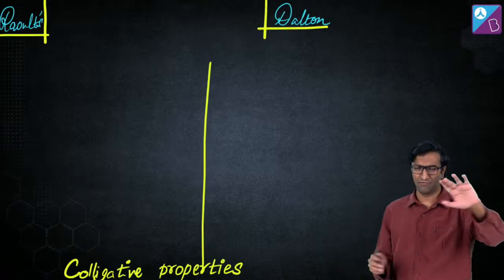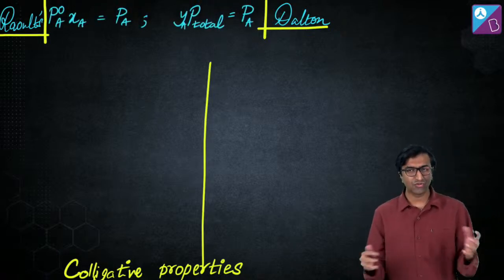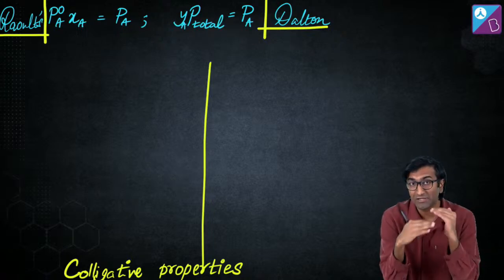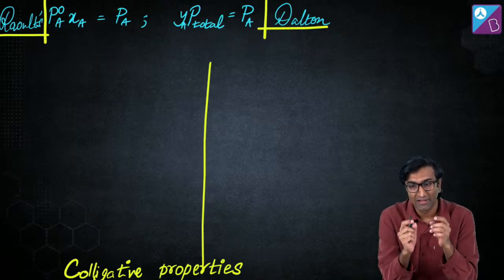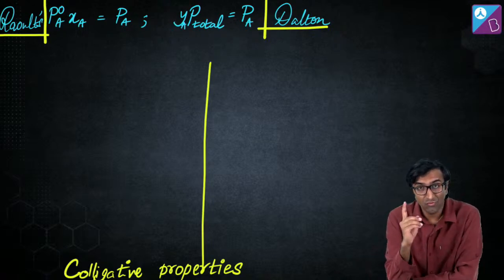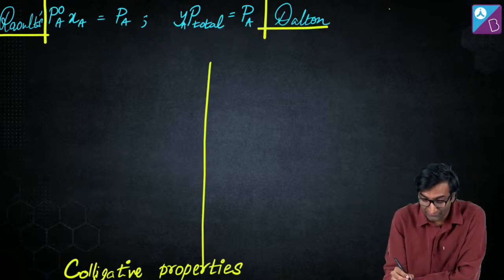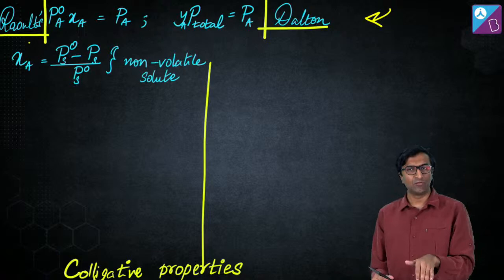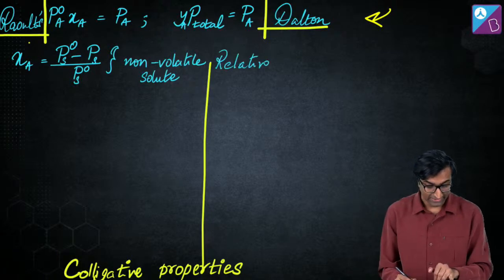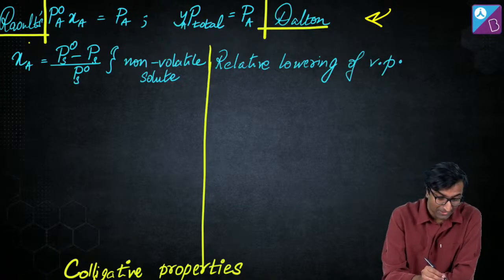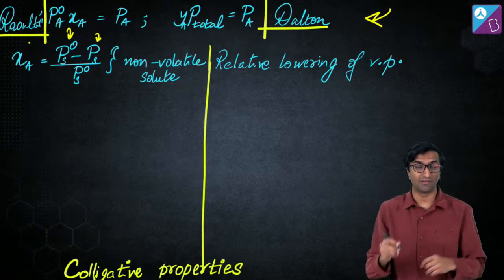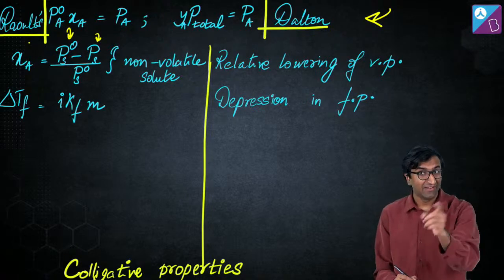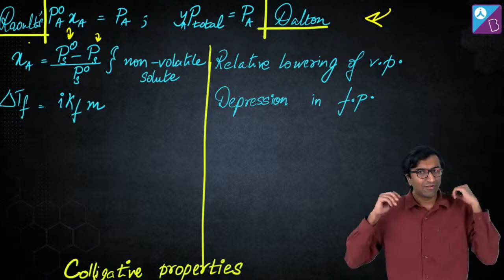There's a fall in vapor pressure explained by Raoult's Law — this is for ideal solutions with a non-volatile solute in a volatile solvent. If you have two volatile liquids, you also use Dalton's Law. The formula for mole fraction of solute: (P₀ − Ps)/P₀, where P₀ is the pure solvent vapor pressure and Ps is the solution vapor pressure. For freezing point depression: ΔTf = i·Kf·m, where m is molality and i is the van't Hoff factor.